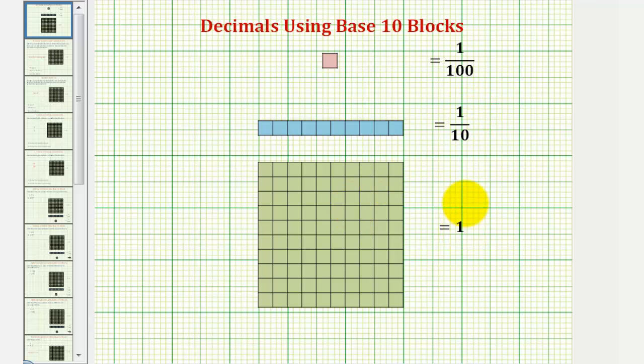And the one by one grid, often called a bit, is equal to one hundredth. Notice ten bits equals one long, since ten hundredths equals one tenth, and one hundred bits equals one flat, since one hundred one hundredths equals one.